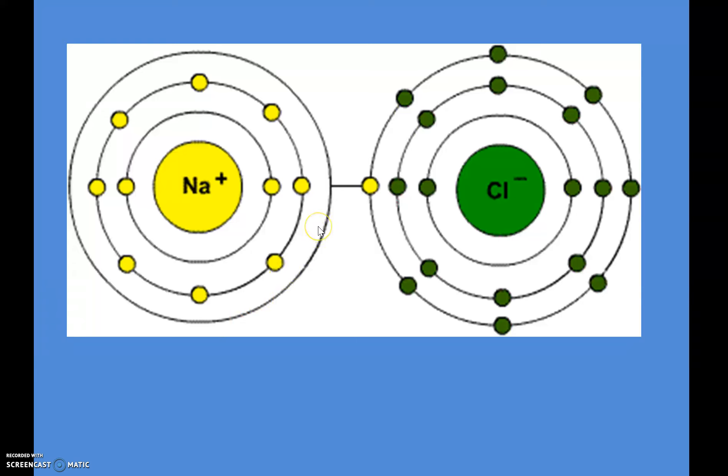If you remember back to our electron diagrams, you remember that atoms want to have their outermost shell filled. Sodium has two electrons in its first shell, eight in the second shell, and only one in its third shell. Sodium would either want to take on seven more electrons, which is pretty unlikely, or get rid of that one.